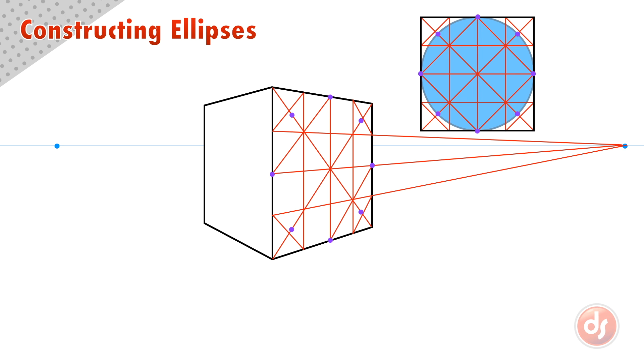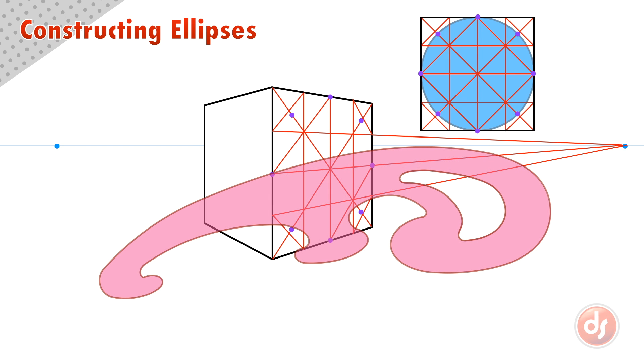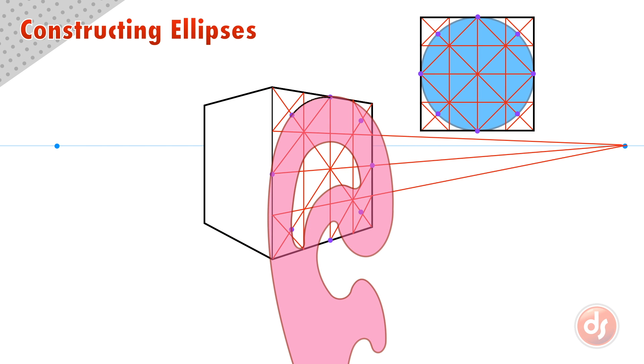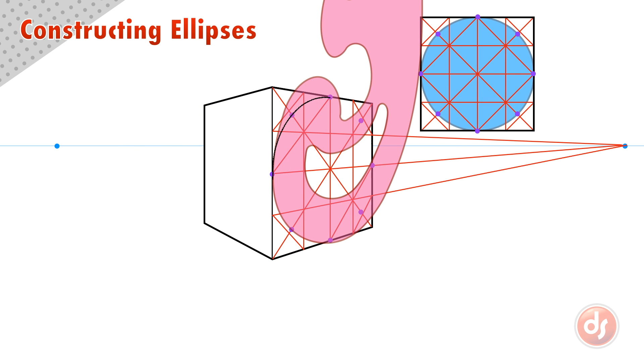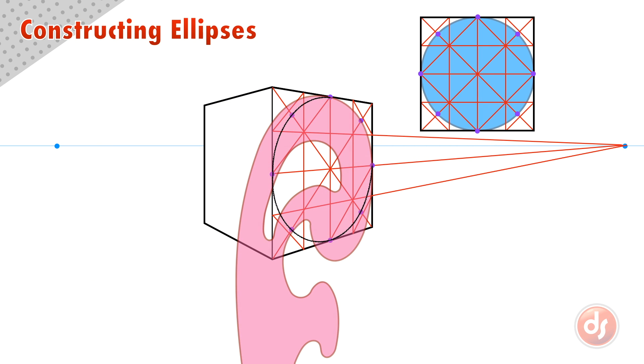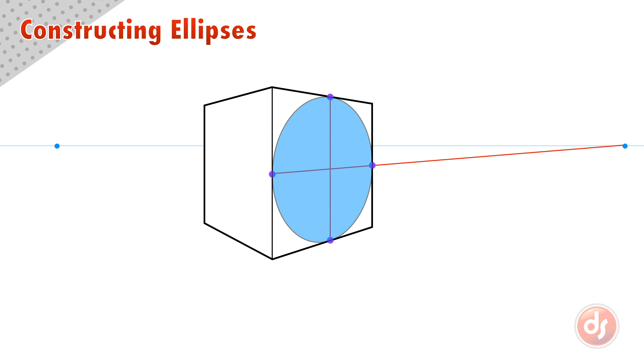If we're drawing with traditional mediums, we can use French curves to connect these points together to form the ellipse. You simply turn the French curve to find a line that matches the arc between two points. Do this for each section, connecting the points together as you move around the box. It's important to make note that these points of tangency are the widest points of the circle in perspective, which will differ from the major and minor axis. The major and minor axis will be tilted as they go through the widest parts of the ellipse as a flat shape. The tilt of these axes is very hard to get right by eye, especially for a student new to perspective.